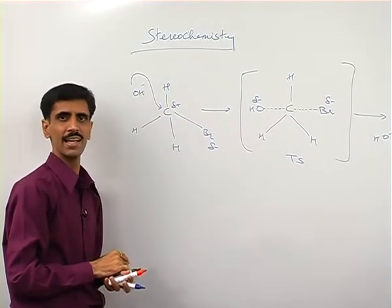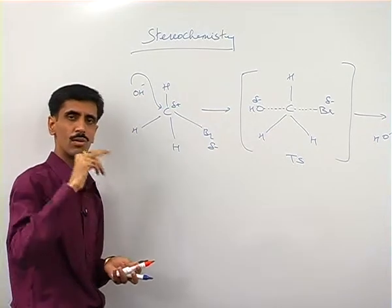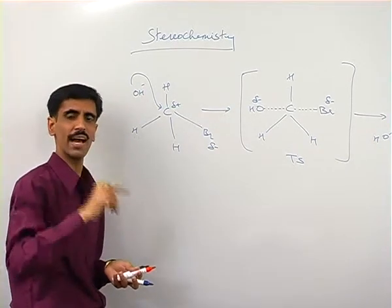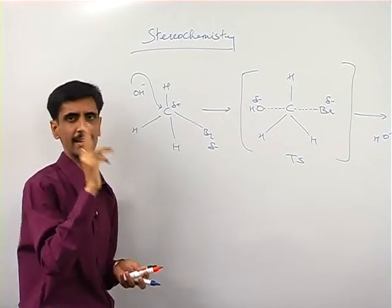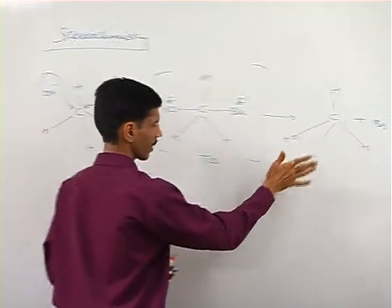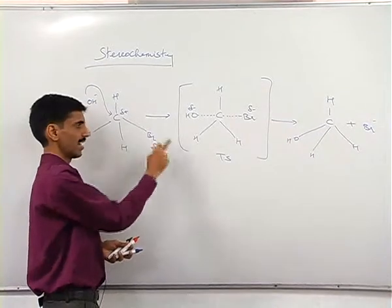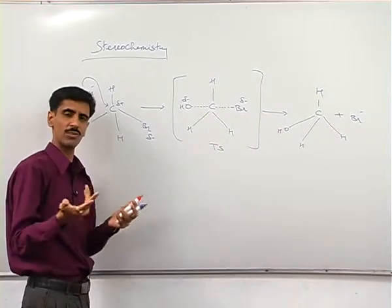And that's why you should remember, whenever we consider this SN2 mechanism, the nucleophile is going to attack from the backside. It's always a backside attack. And as a result of which, the final product you get, if you look at the positions, that is the arrangement. Because stereochemistry is all about the arrangement.